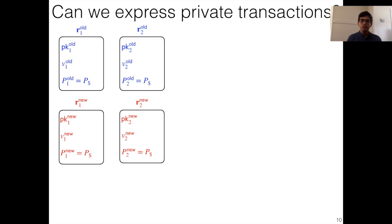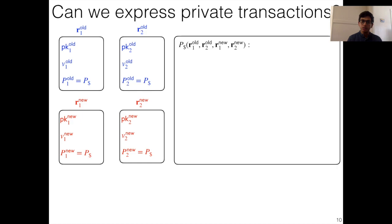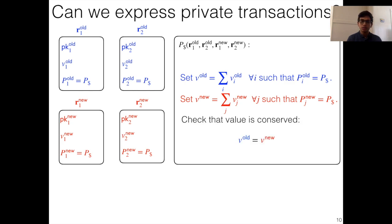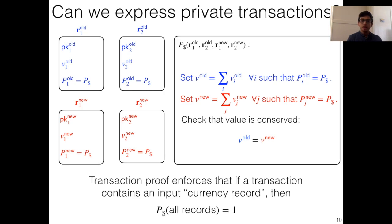Okay, so in private transactions, the payload of each record is just the value, and the predicate is, as before, the value conservation predicate. So this predicate will look at the input coins, input records, check if they're actually meant to represent currency, do the same for the output records, sum up the values, and check that the value is conserved. Now, what our system so far will guarantee is that if the transaction proof is valid, then if there's a single currency record that's provided as input, the conservation predicate is satisfied. So whenever there's a single input currency record, the transaction proof will enforce that the conservation predicate is satisfied.